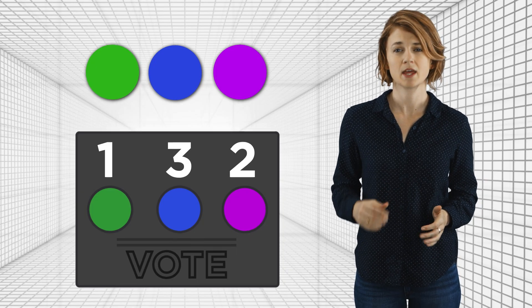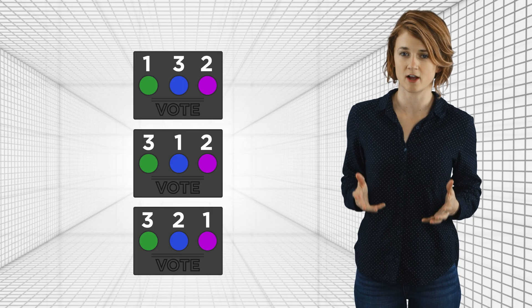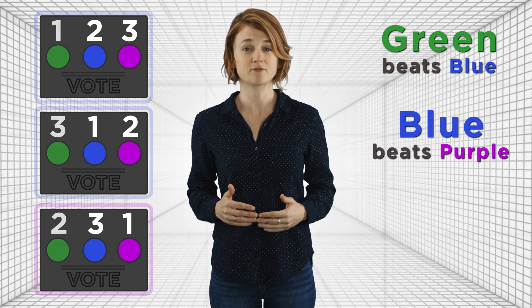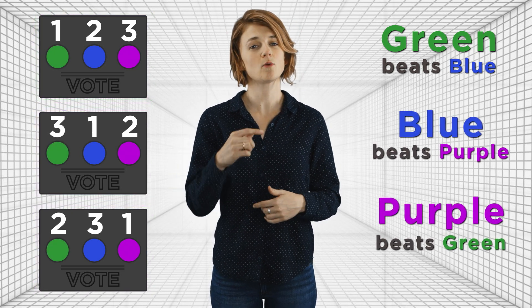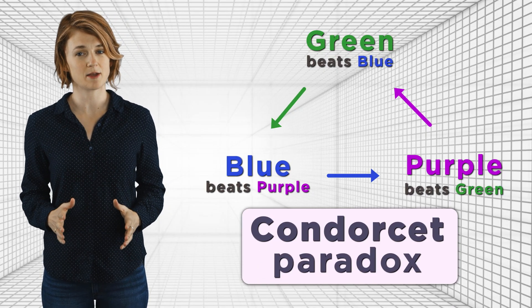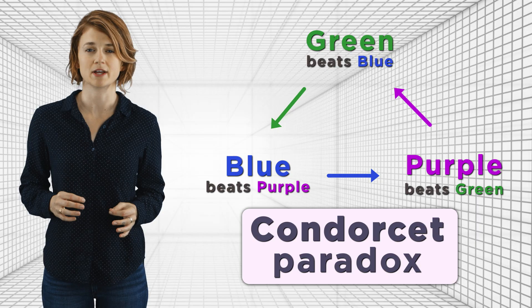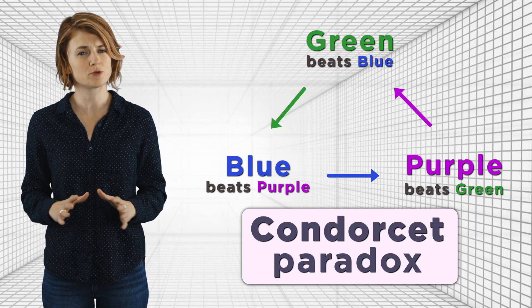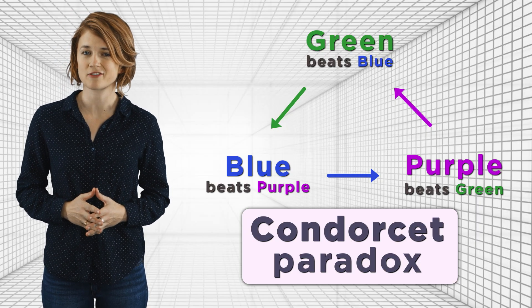For simplicity, let's pretend only three people voted. Each color was exactly one person's favorite, so that's not so helpful. Using a majority rule strategy comparing two colors at a time: two people ranked green higher than blue, so green beats blue. Two-thirds ranked blue higher than purple, so blue beats purple. And for the same reason, purple beats green. The pairwise preferences form a cycle — that's called the Condorcet paradox. Even though each individual has strictly ranked their preferences, there's no way to rank their collective preferences.